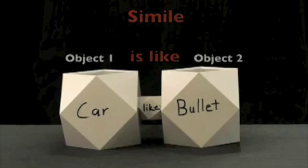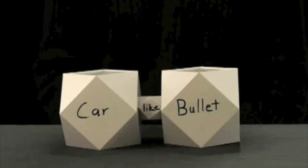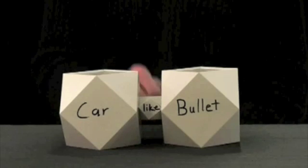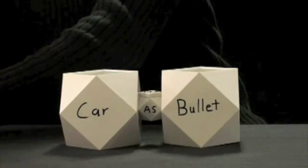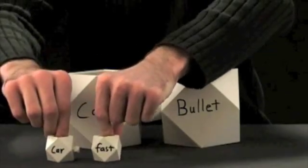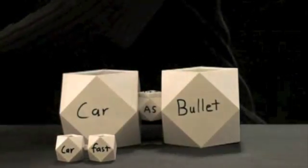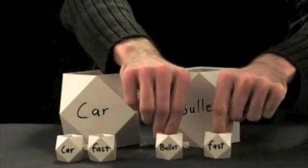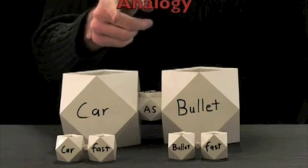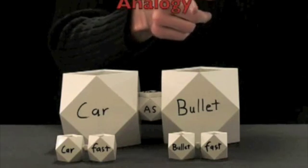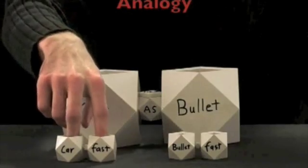Notice that both metaphors and similes have an analogous structure, which we can represent here in general terms by changing the relationship to as and deconstructing the parts of the metaphor or simile that are implicit. In this example, we see that the car is fast as a bullet is fast, and it is now clear that the underlying structure of metaphors or similes is an analogy.